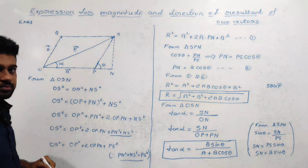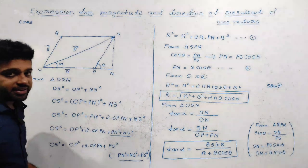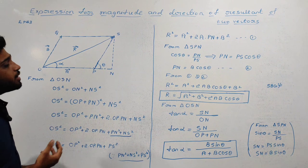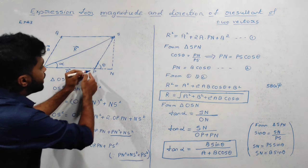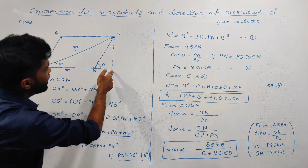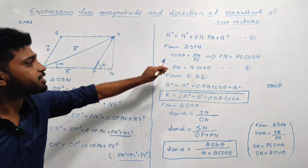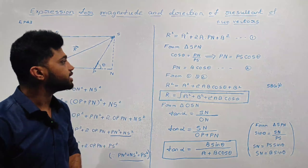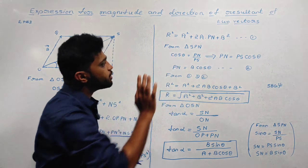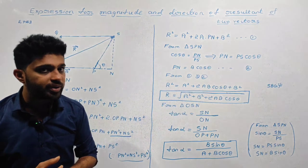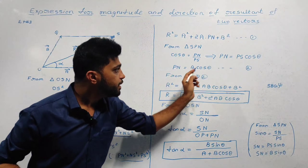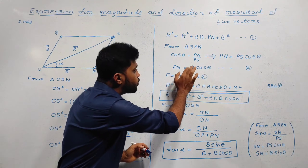...cos theta is equal to PN divided by PS. Since PS equals B, we get cos theta equals PN divided by B, therefore PN equals B cos theta. This is equation number 2.